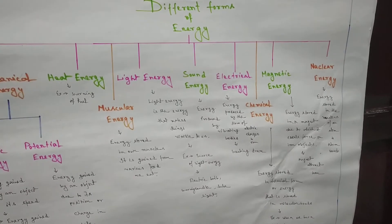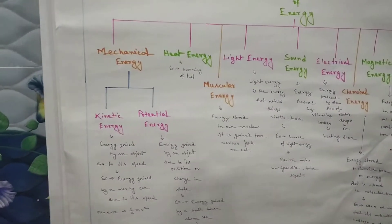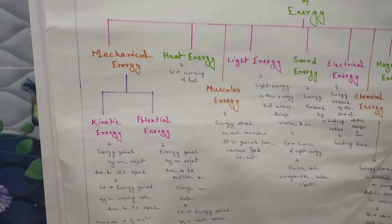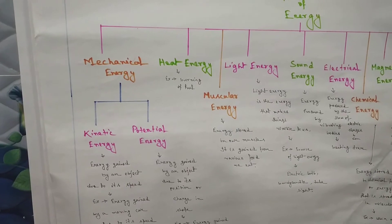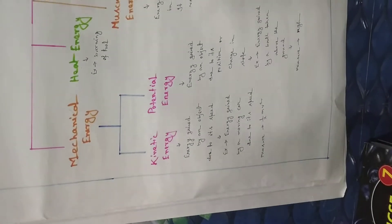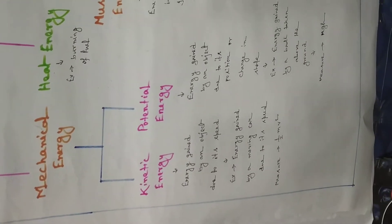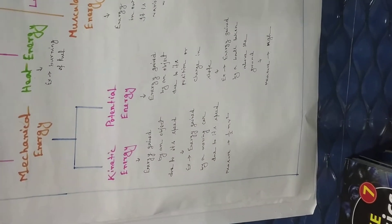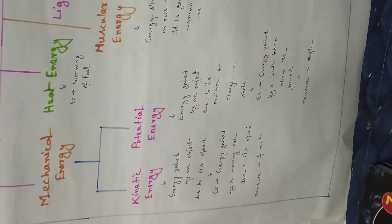Nuclear energy, and so on. Now, what is mechanical energy? Mechanical energy is the energy gained by an object due to its motion, its position, or its shape. Mechanical energy can be of two types: one is kinetic energy and another is potential energy.